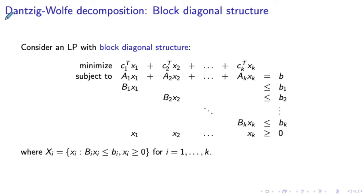Next, we discuss Dantzig-Wolf decomposition for LPs with block diagonal structure. LPs with block diagonal structure are probably the most common type of linear programs that are solved by this method in practice, and they have the following form.